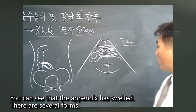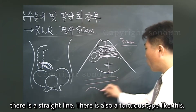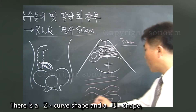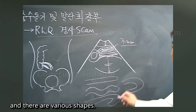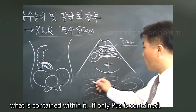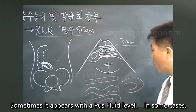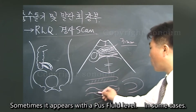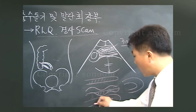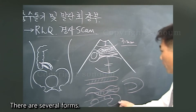The appendix can appear in several forms: a straight line, a tortuous type, a Z-curve shape, or a U shape. As for contents, if only pus is present, it may appear with a pus fluid level. Sometimes it appears with a lump of feces inside — there are several forms.